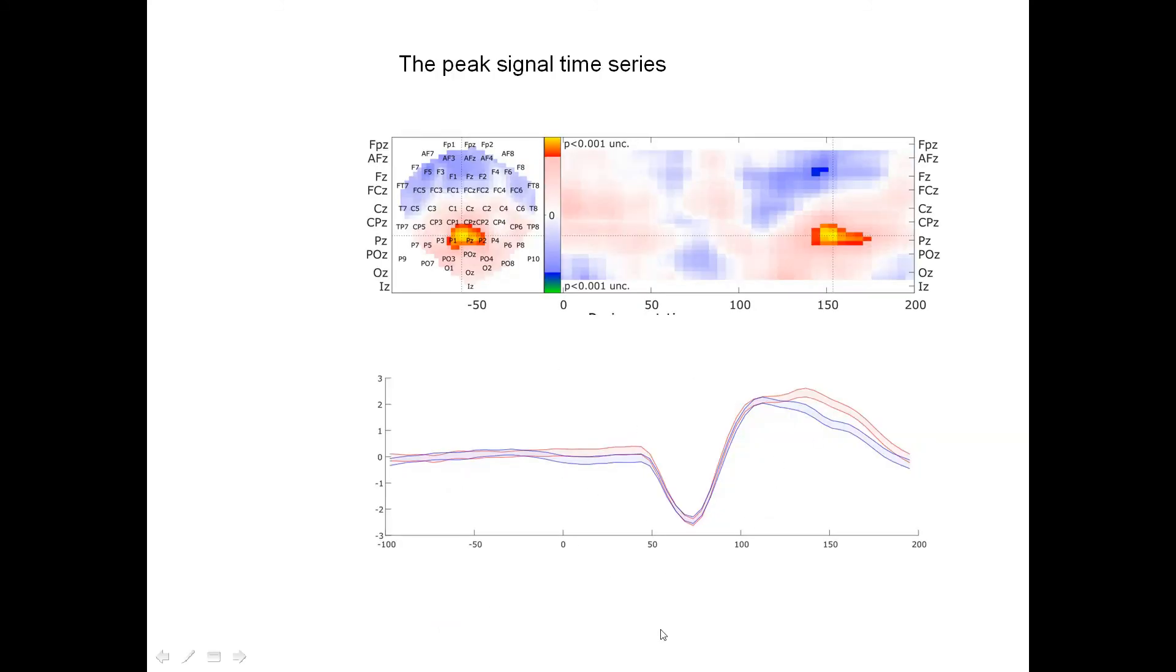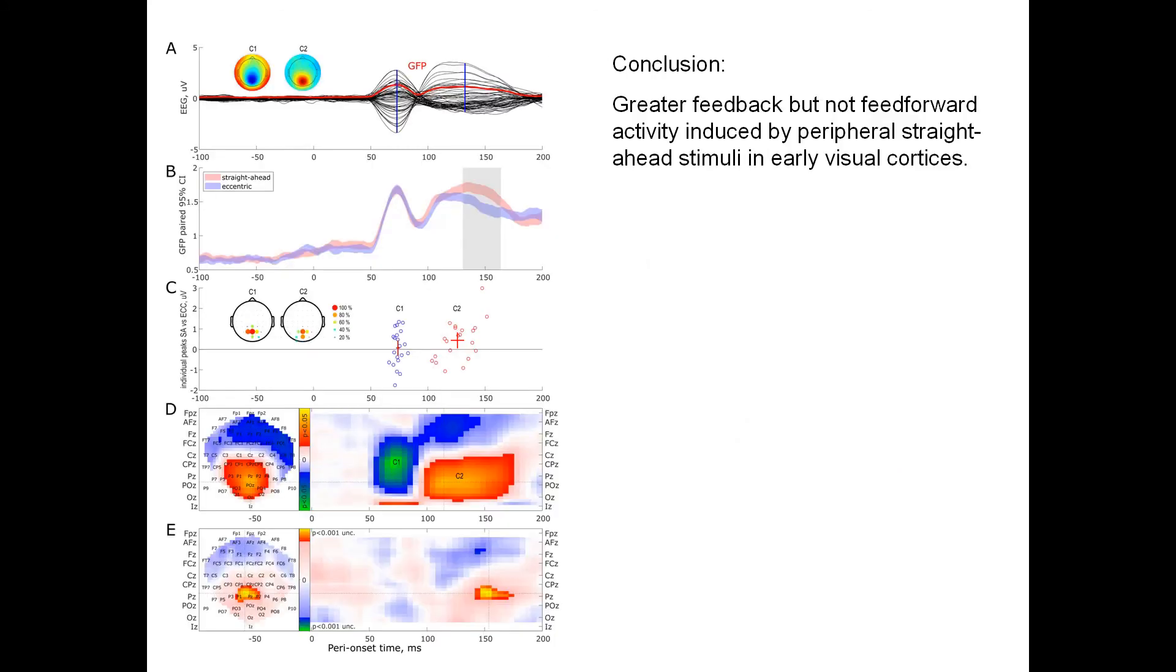And this is just for an illustration. It's not for statistics. The time course of the peak. Obvious fishing, but looks pretty much the same as for the GFP. And again, if you look at the stage, at the time slot of C1 component, we get nothing. The conclusion is that a greater feedback, but not feed-forward activity induced by peripheral striate stimuli in the early visual cortices.